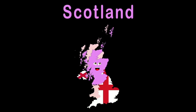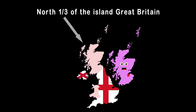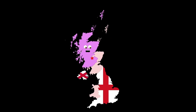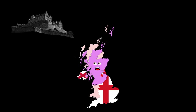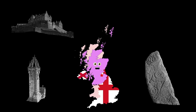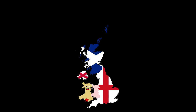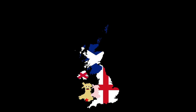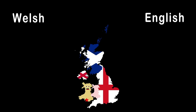I'm Scotland — my capital's Edinburgh. I'm a country covering the north third of the island of Great Britain. I share a border with England to the south and am surrounded by the Atlantic, North Sea, and Celtic Sea. I'm home to Edinburgh Castle, the Wallace Monument, and the Pictish Stone. I'm Wales — my capital is Cardiff. I'm a country in the UK on the west of the island of Great Britain, with 1,680 miles of coastline. My languages are Welsh and English.